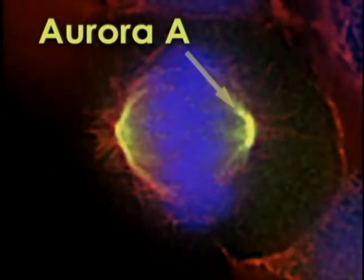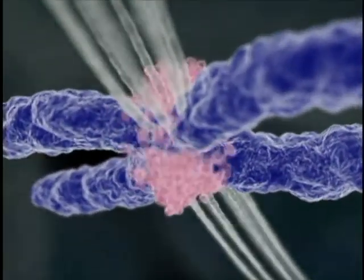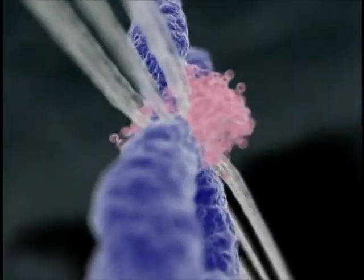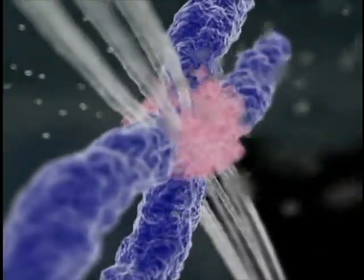Aurora A is thought to play a role in regulating centrosome function. At the spindle checkpoint, Aurora B plays an essential role in recruiting proteins such as BUB-R1 to the kinetochores.